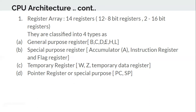The general purpose registers are six: B, C, D, E, H, and L. The special purpose registers are the accumulator, instruction register, and flag register. The temporary registers are W and Z. The pointer registers are the program counter and stack pointer.